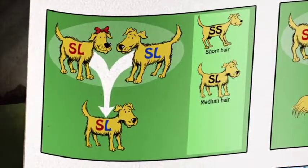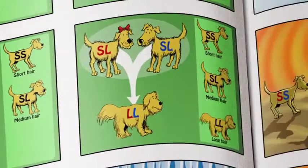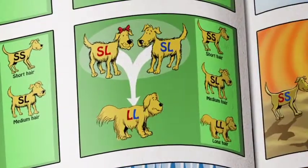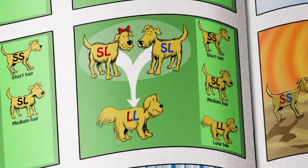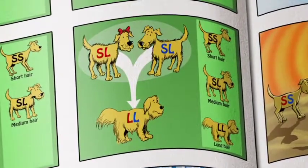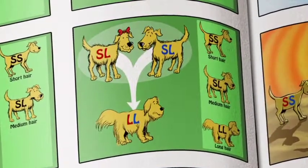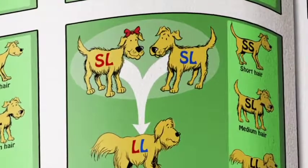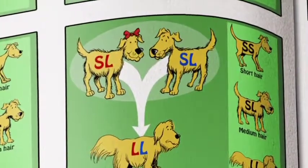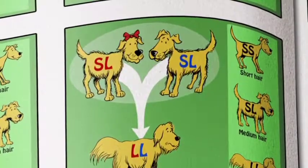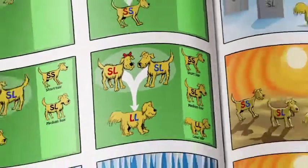And then there's one other combination — L and L. It's got a new combination of information, but the information was already there in the parents. It's just a new combination of information.